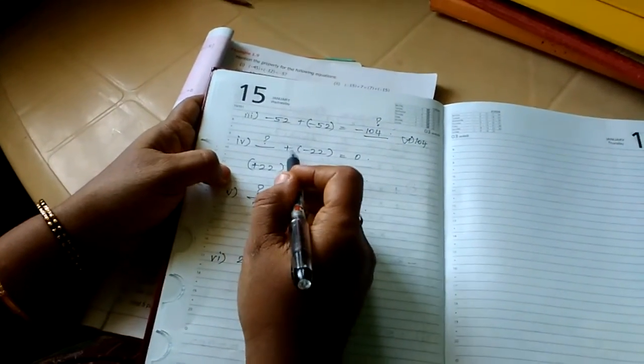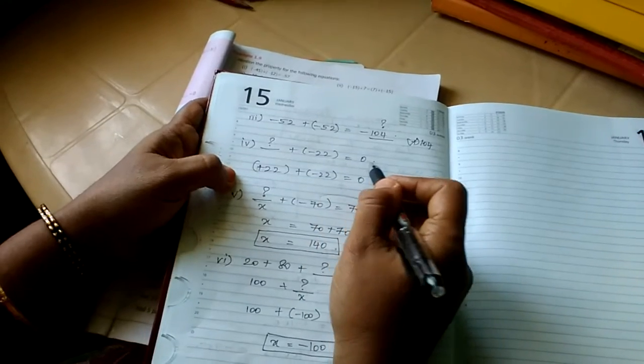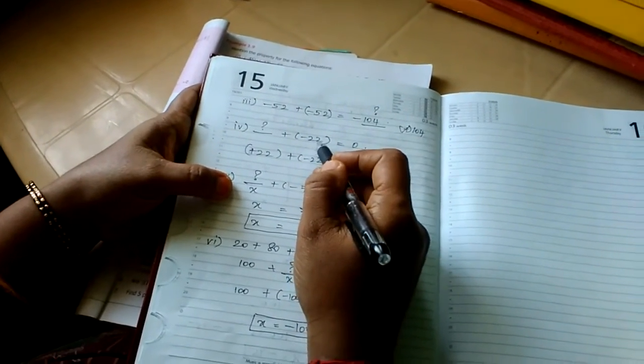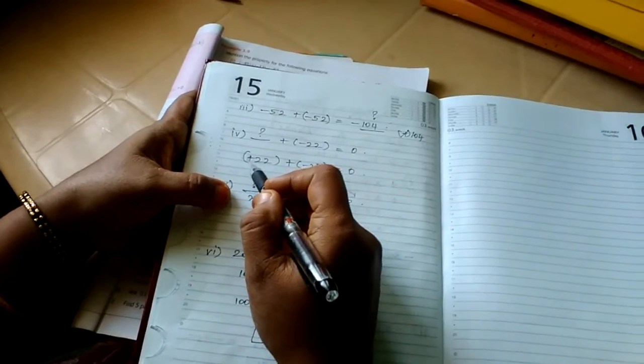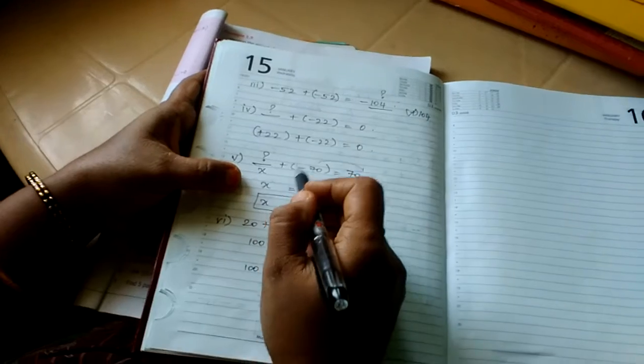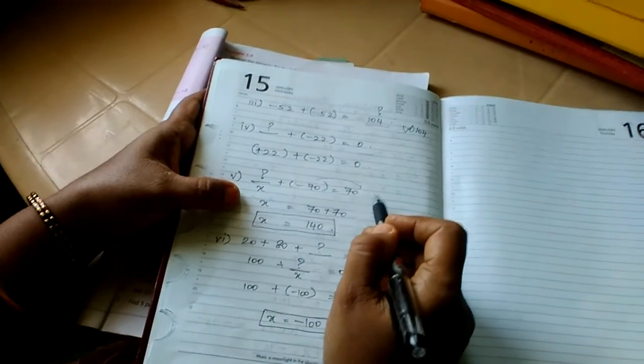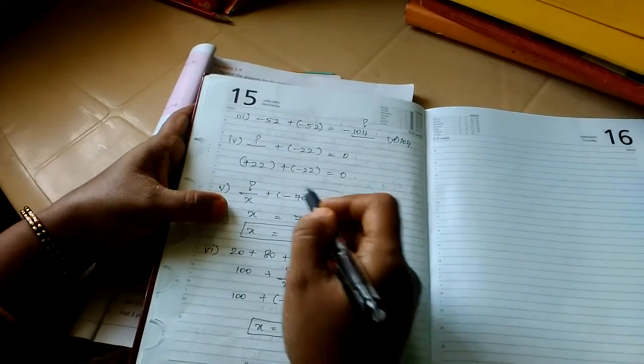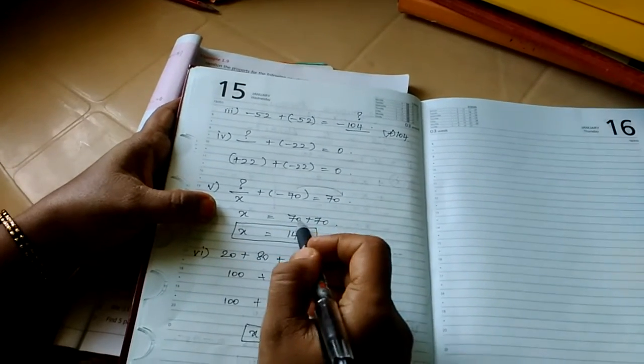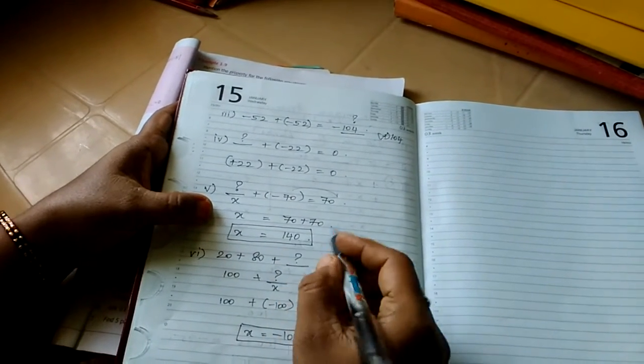The fourth question. Dash plus of minus 22 equal to 0. Which is very easy children. Minus 22, which number you will add with that you will get 0? Automatically it will be plus 22 minus 22 equal to 0. Next, dash plus of minus 70 equal to 70. The minus part will go to the opposite side. It will be plus. So x is equal to 70 plus 70. It will become 140.